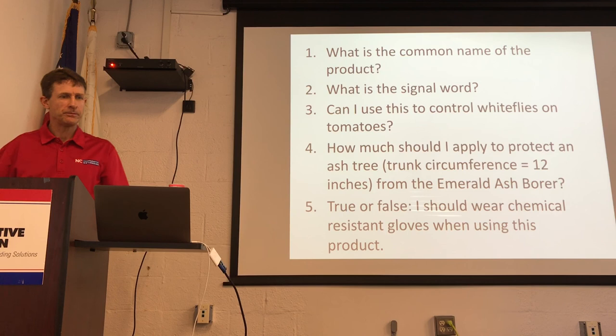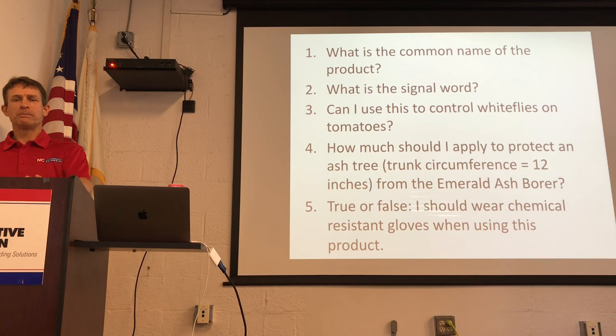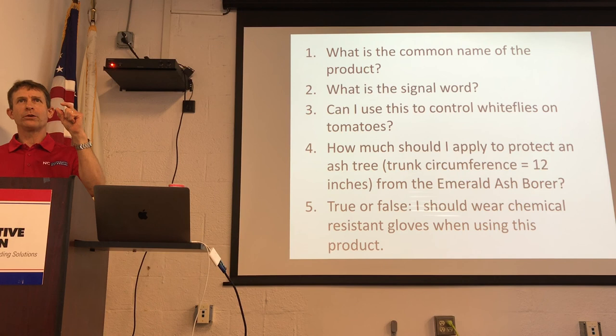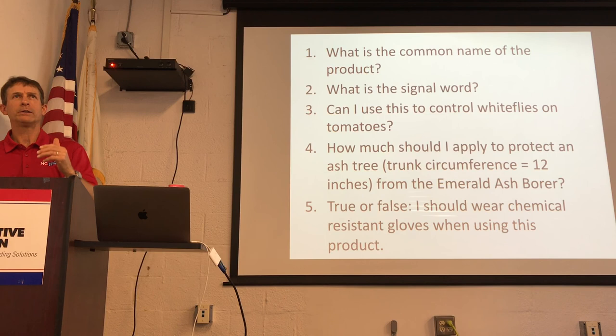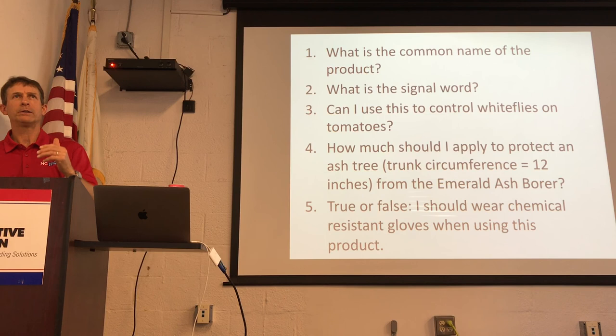A student asked: what is a signal word? A signal word is a single word found on the label of every product that gives you a quick indication of the level of toxicity. The three words used, in order of increasing toxicity, are: caution, warning, and danger. It's usually in a larger font and it's always on the front of the label.